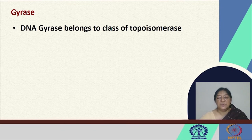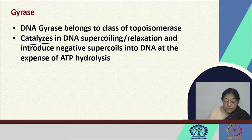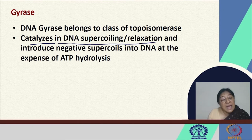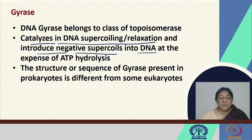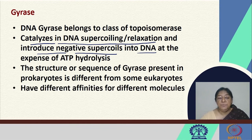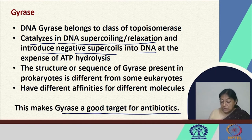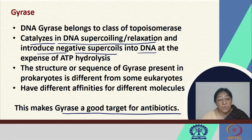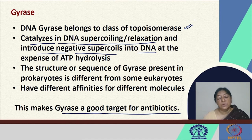An example of one such topoisomerase is gyrase. DNA gyrase belongs to the class of topoisomerases. It catalyzes DNA supercoil relaxation and introduces negative supercoils into the DNA, again at the expense of ATP hydrolysis. The sequences of gyrase proteins present in prokaryotes are different from those in eukaryotes, and because they have different affinities for different molecules, gyrases are often used as good targets for antibiotics.